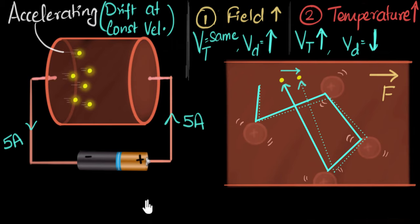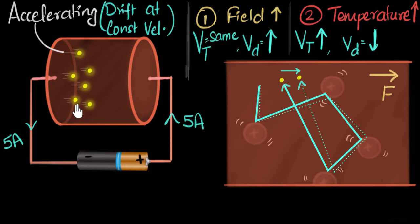That's pretty much it. This model was first put forward by a German physicist named Paul Drude, and so it's called the Drude model. Although the model is primitive — we're still using Newtonian mechanics, and we know electrons are quantum particles requiring quantum mechanics — even with Newtonian mechanics we get a pretty good insight into what's happening. And we will be able to derive Ohm's law using just this model.